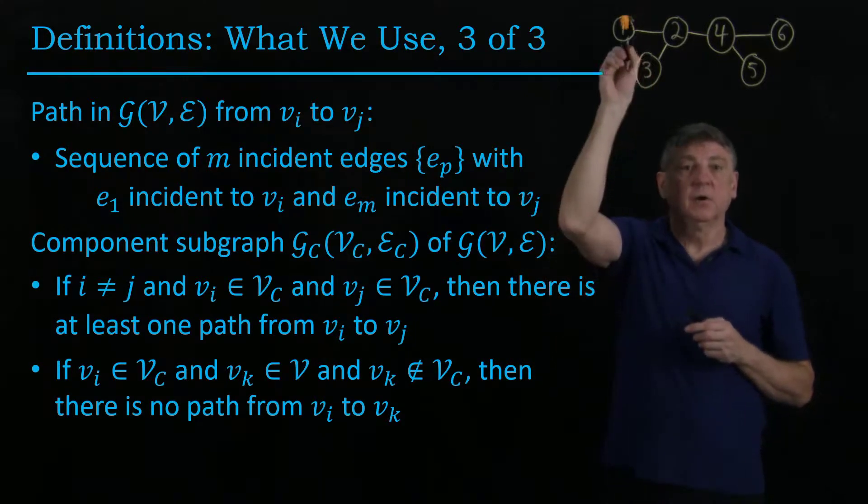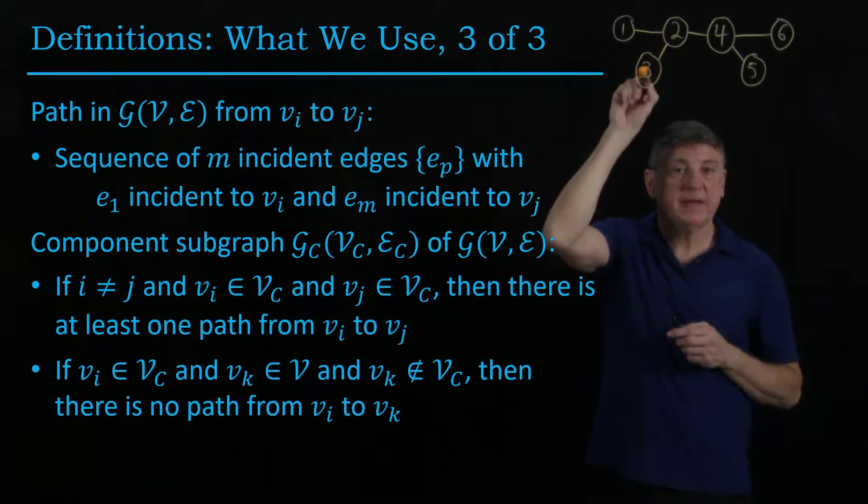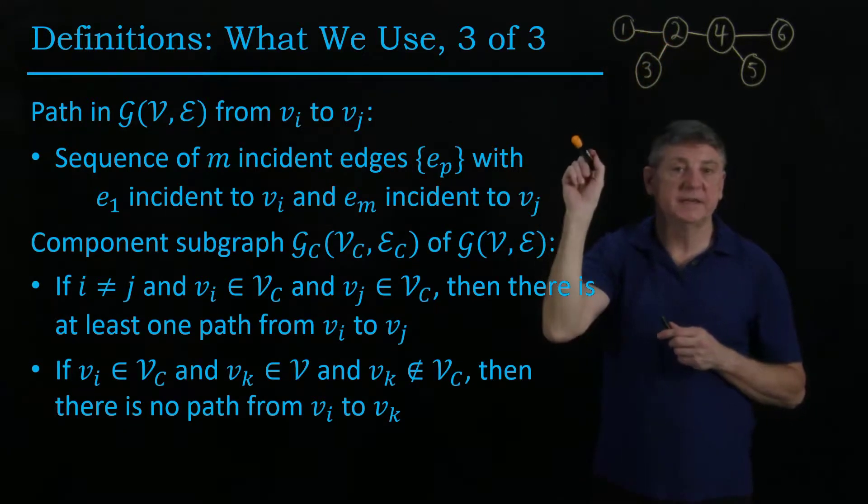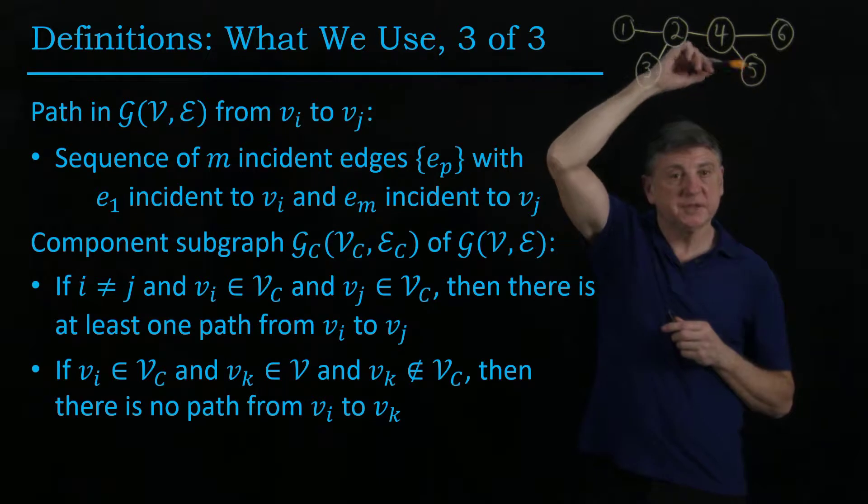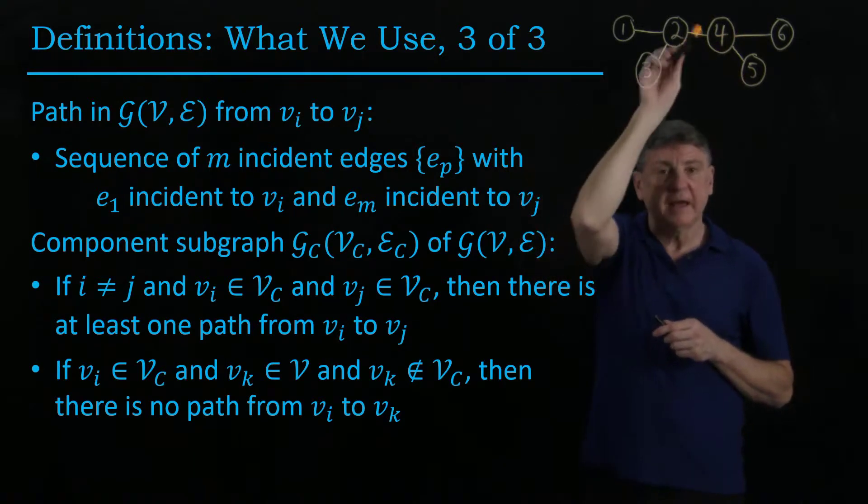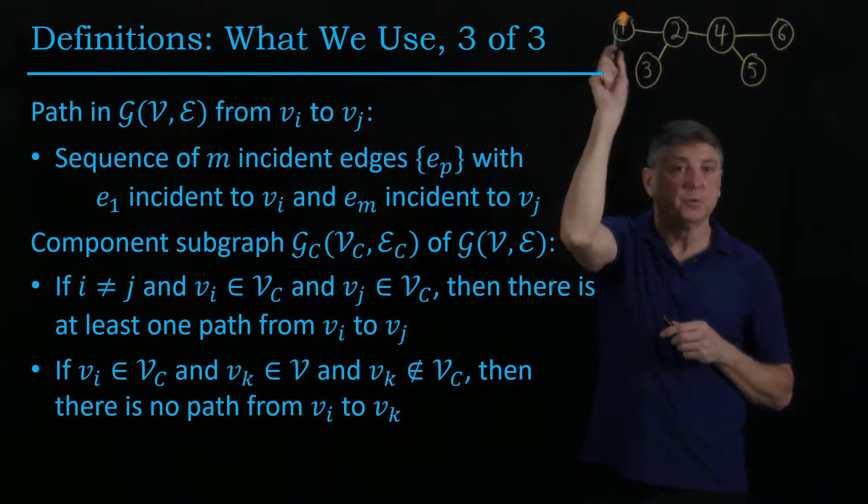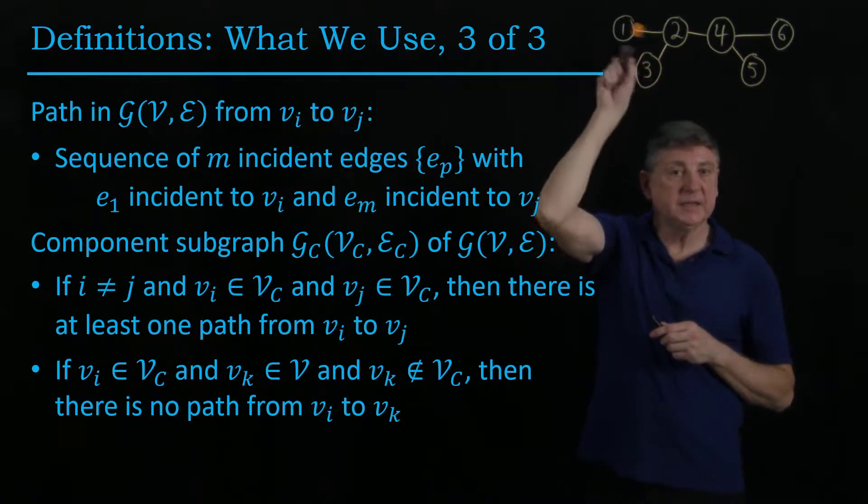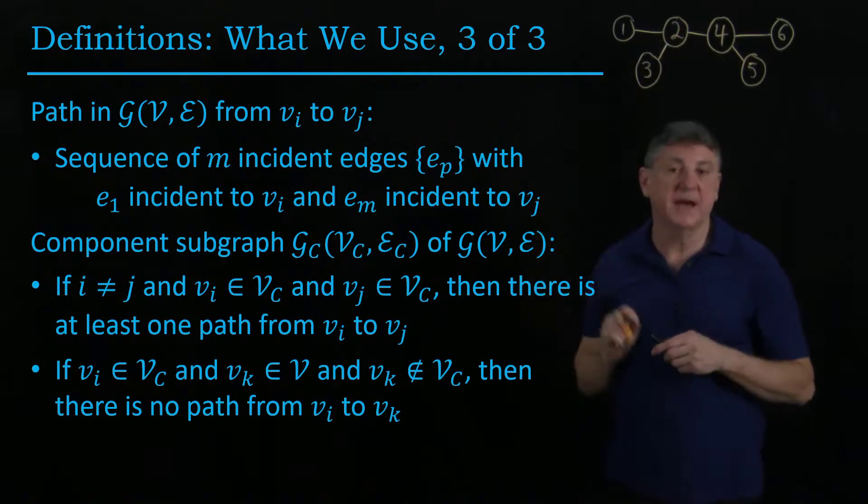So here, 1 2 3, we can form a path from any two non-identical vertices. 4 5 6, we could form a path, and if we've erased this edge, then there's no path from anything in this component to anything in that component.